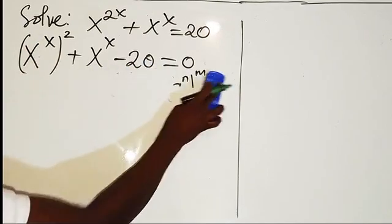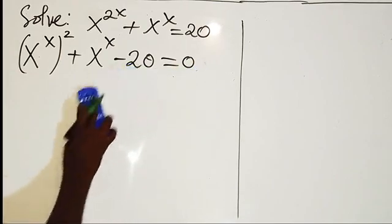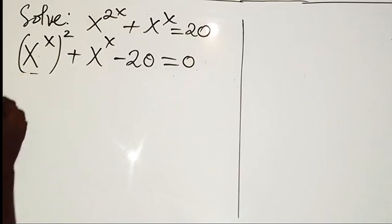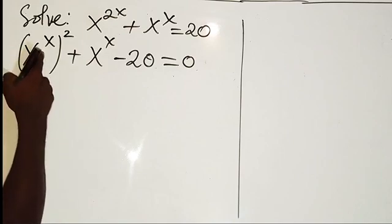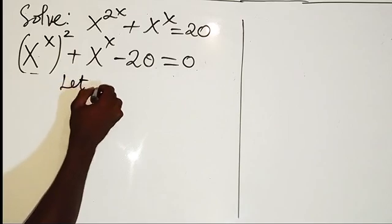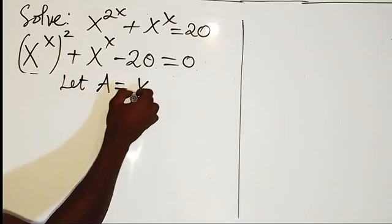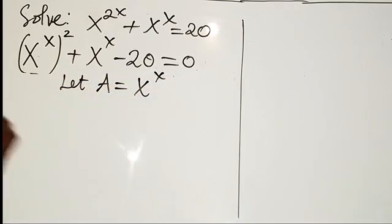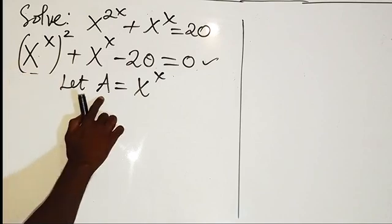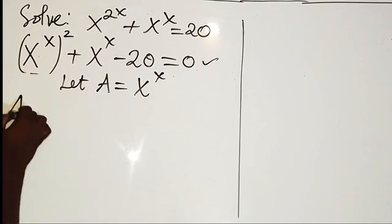So now we're going to see that x to power x is here, x to power x is here. So we can set let A equal to x to power x. So therefore from this equation, anywhere we see x to power x, we replace it by A. So I have A squared plus A minus 20 equals 0.